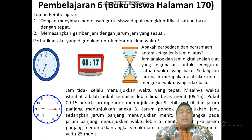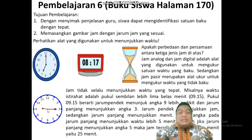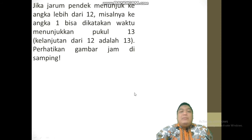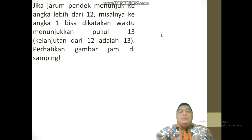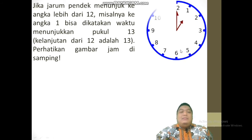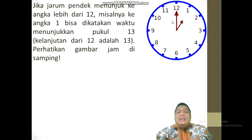Sampai ke angka 12 berarti pas jamnya. Contohnya: jarum pendek ke angka 9, jarum panjang ke angka 12, berarti itu jam 9 pas. Itu jarum panjang menunjukkan ke angka yang mana, itu menunjukkan menitnya. Jika jarum pendek menunjukkan ke angka lebih dari 12, misalnya ke angka 1, bisa dikatakan waktu menunjukkan pukul 13 — kelanjutan dari 12 adalah 13.